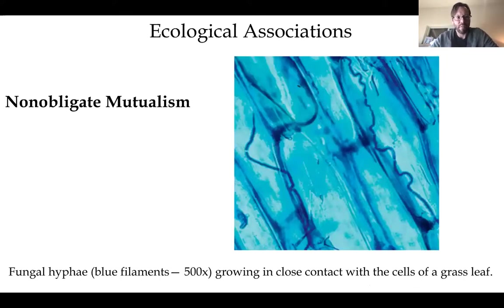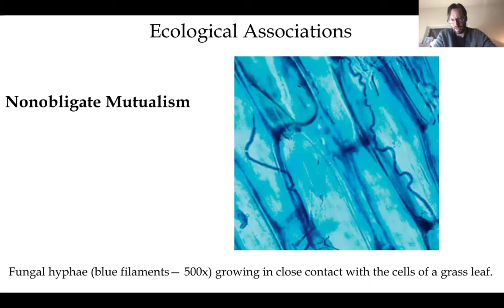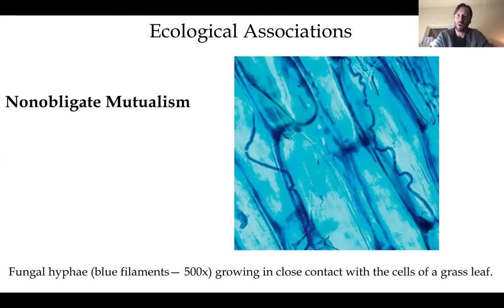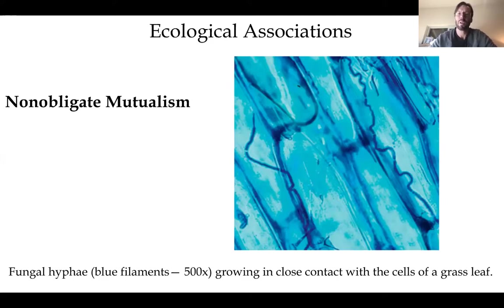A fungal hypha is a projection from the fungal cell. In this case, it has a mutualistic relationship with a grass leaf. Fungi cannot photosynthesize, so they get sugars from the plant, and in return help provide non-sugar nutrients to the plant. Many fungi — called mycorrhizae — have this symbiotic relationship with plant root systems, getting sugars from the plant while giving nutrients to the roots.